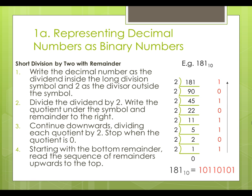Once the quotient reaches zero, the binary form of this number can be found by reading the sequence of remainders from the bottom to the top. So the decimal number 181 can be represented as 10110101 in binary.